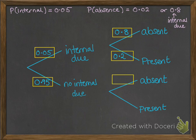Now on the bottom half of the graph, if he's got no internal due, the chance of him being absent is 0.02. They have to add up to 1. So this one is 0.98 chance that he will be present.